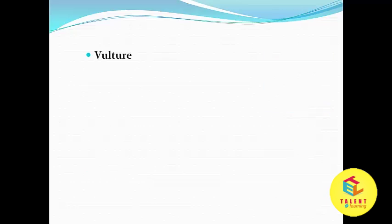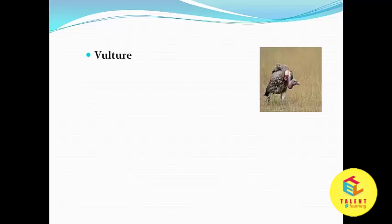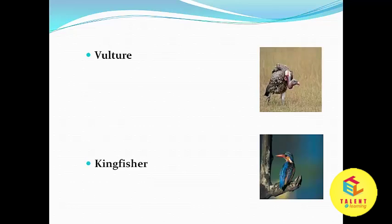Which is the next alphabet? Yes, it's V. V for vulture. And it is a vulture. Next alphabet is K. K for kingfisher. And it is a kingfisher.